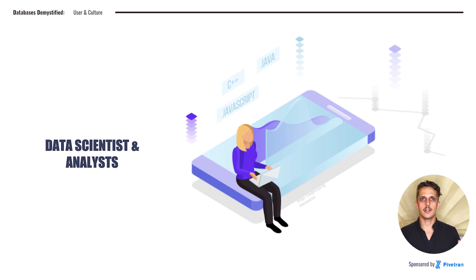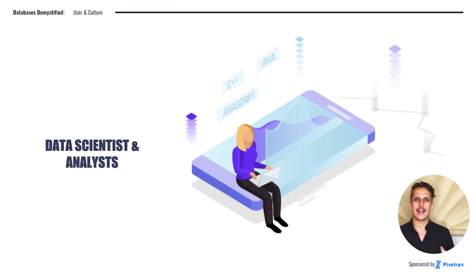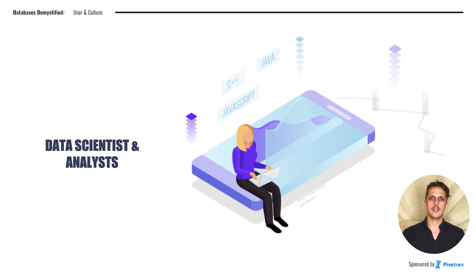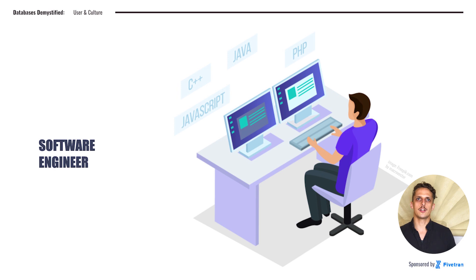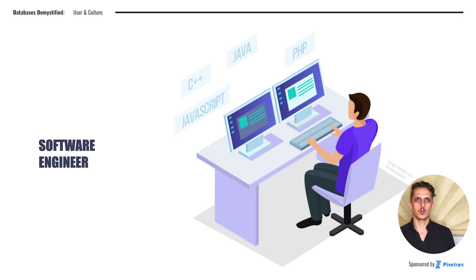They work analytically. They tend to be executing queries against the database, analyzing the data offline. They care a lot about how the data is stored and how to access it efficiently. But that's a very different use case than what software engineers are thinking about. Software engineers are thinking about app stability, app maintainability, questions about throughput, and how fast the app responds to certain queries.